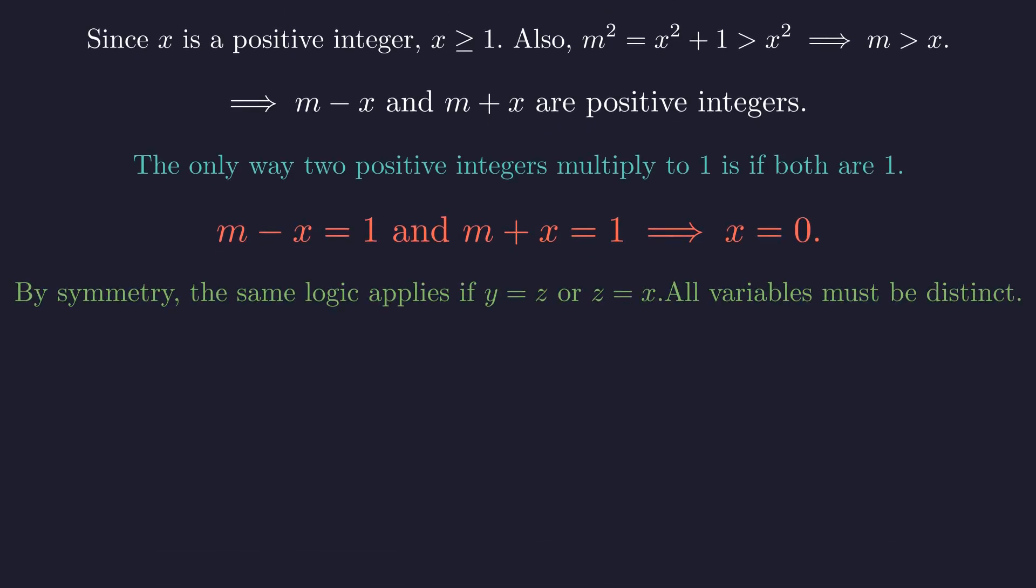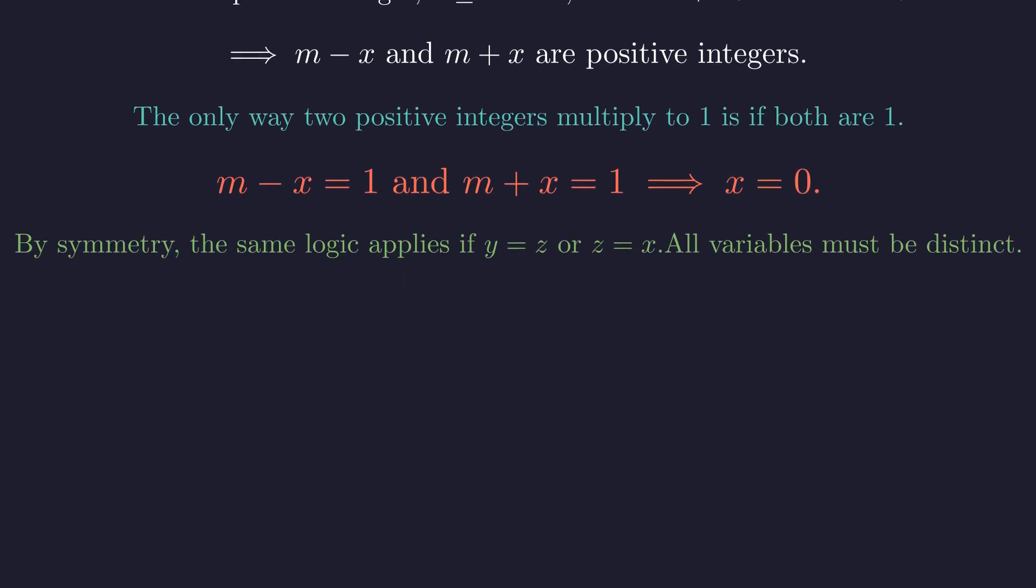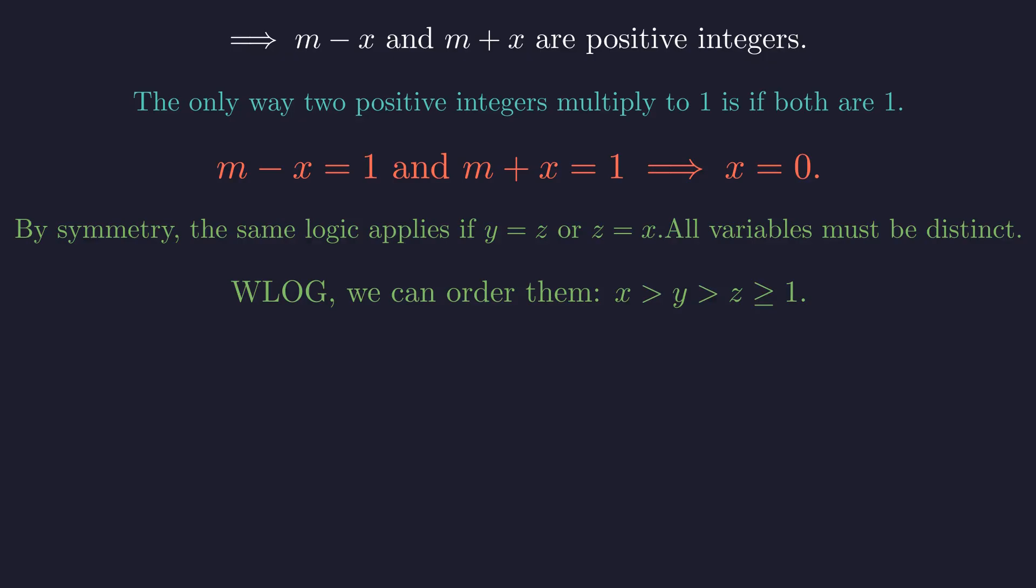We've reached a contradiction. The same argument works if we assume y equals z or z equals x. So in any counterexample, all three numbers must be different. Great, so we can arrange our minimal counterexample so that x is the biggest, y is in the middle, and z is the smallest.